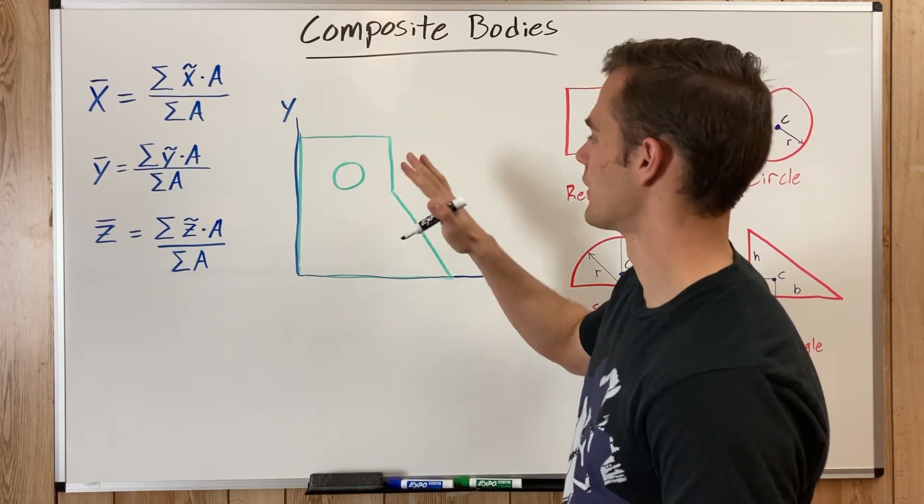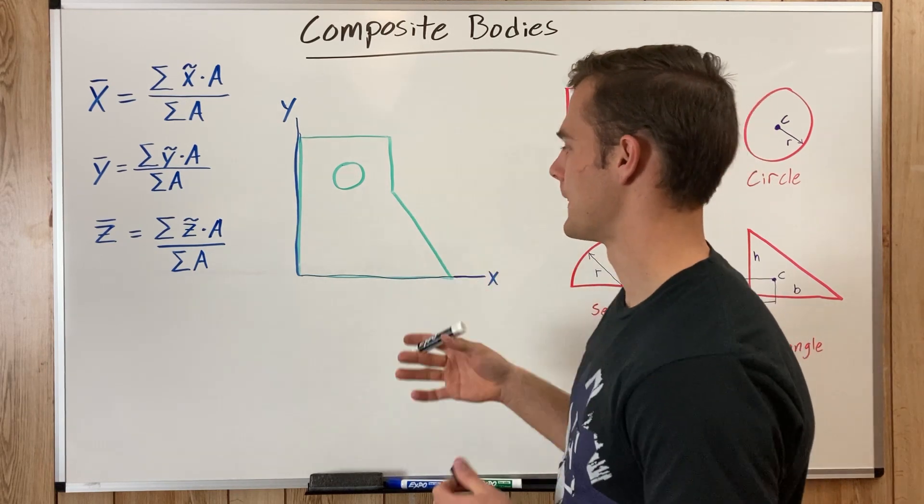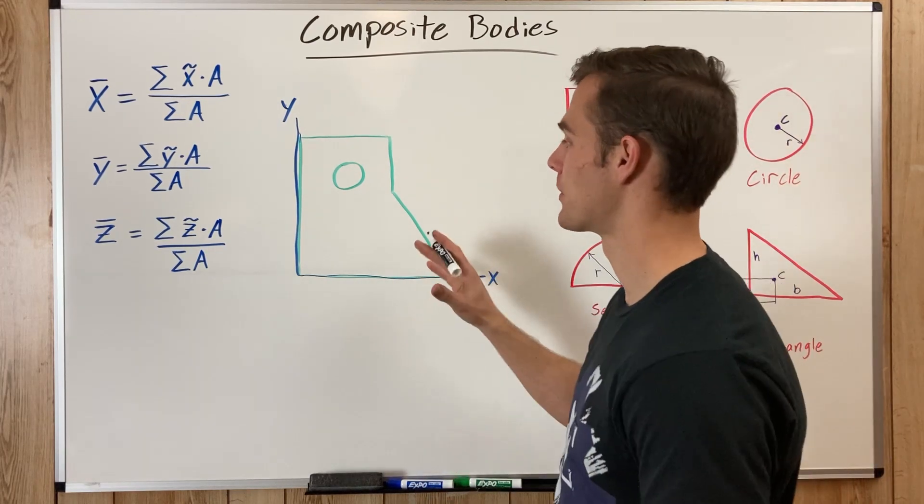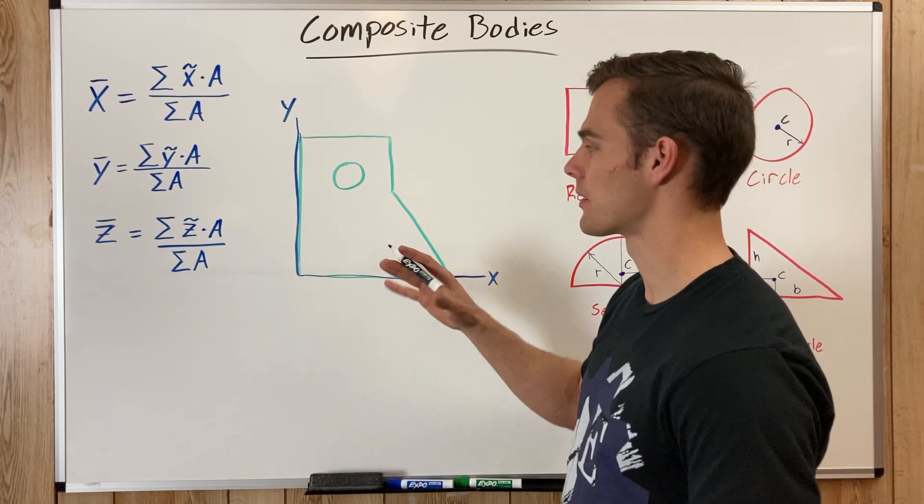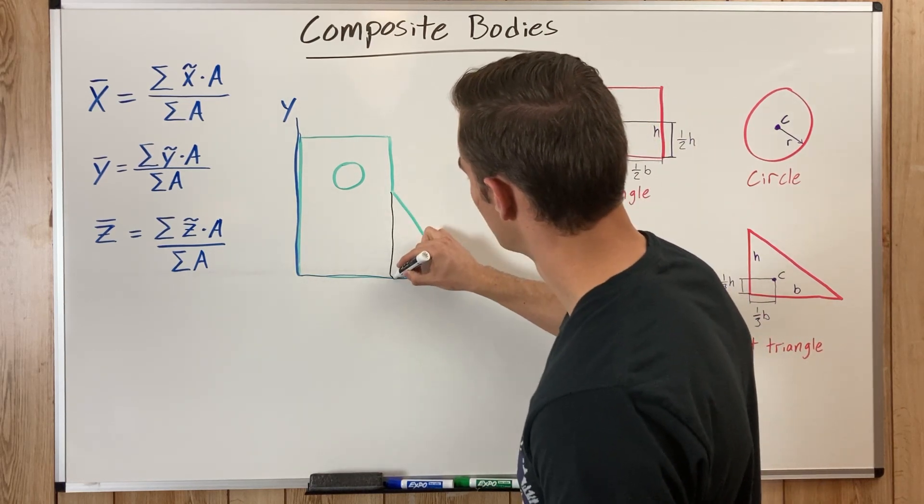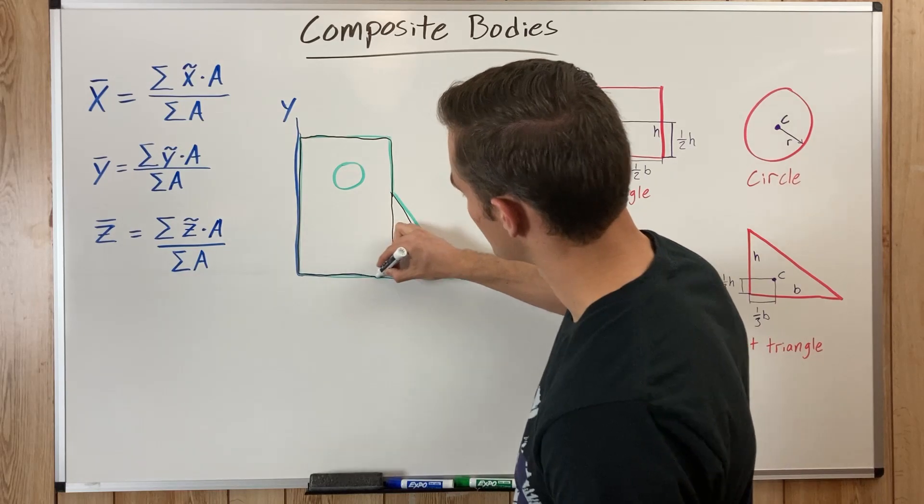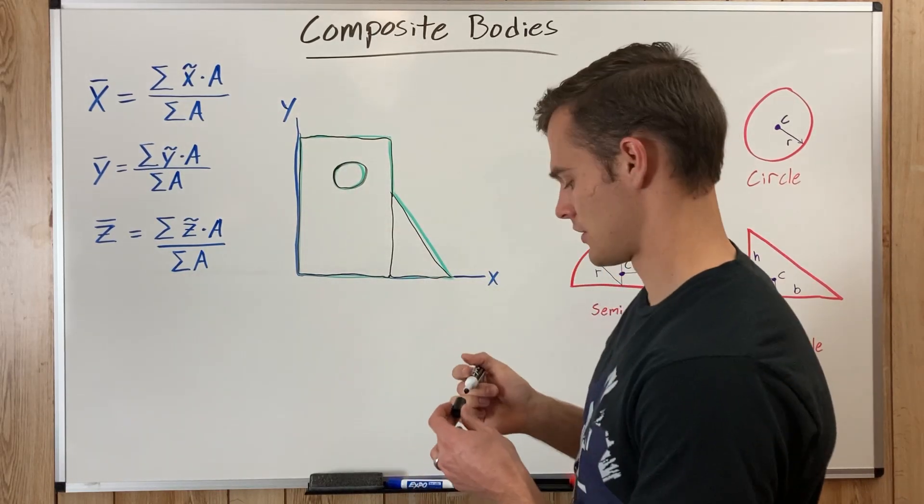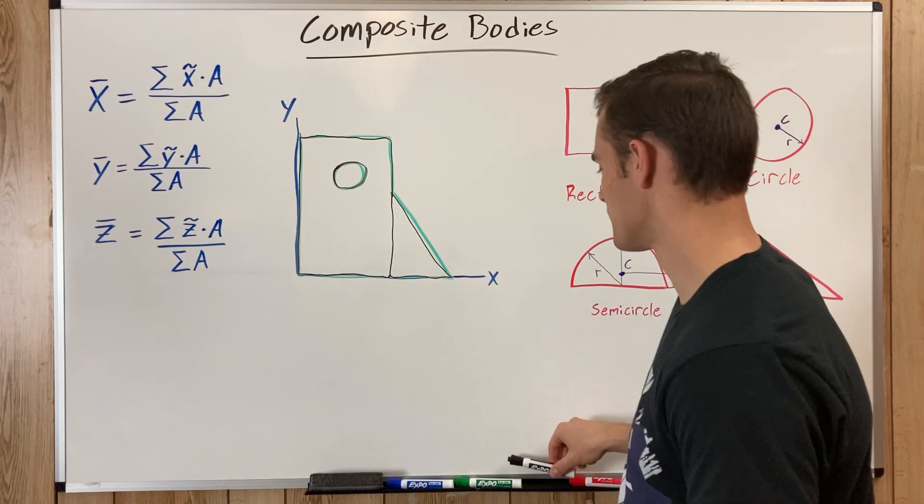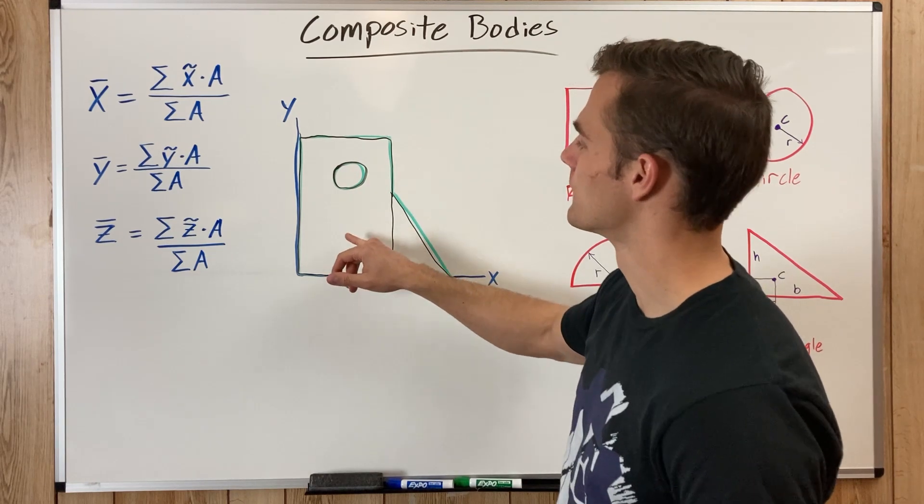So the next step is to break up our shape into its components. So here we have an object, and without breaking this up into its composite parts, trying to integrate this object would probably be impossible because it's not really a continuous function. But if we recognize that this part is a right triangle, this part is a rectangle, and then the hole in the middle is just a circle. So now that we've broken it up into these three separate shapes, we can find the x and y centers of mass of each one of these shapes, the triangle, the rectangle, and the circle.